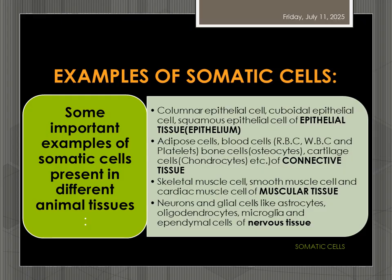Similarly, cells of connective tissue like adipose cells, blood cells, bone cells and cartilage cells — they are also somatic cells. Similarly, muscular tissue has somatic cells like skeletal muscle cells, smooth muscle cells and cardiac muscle cells.